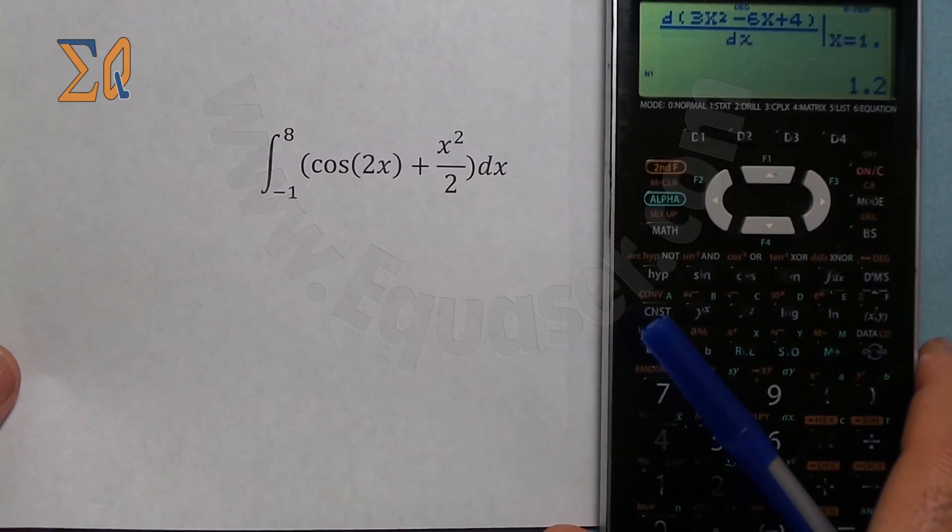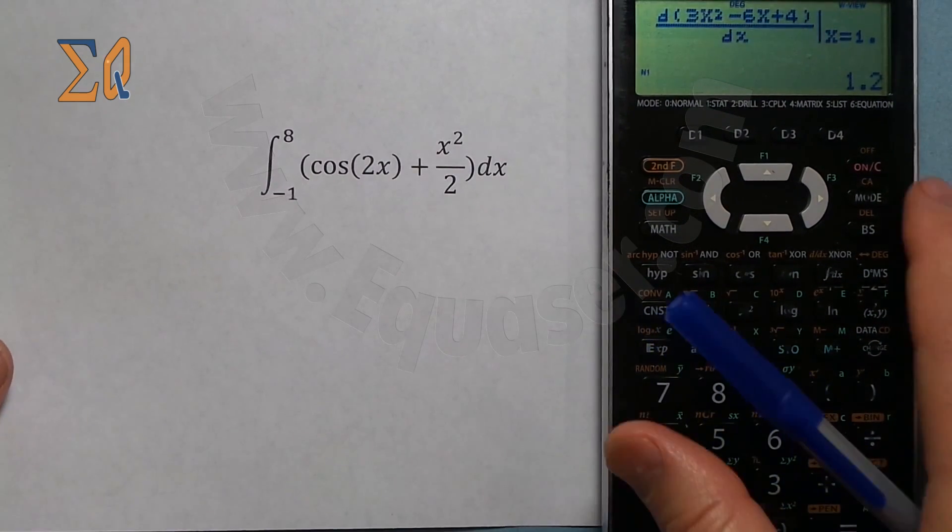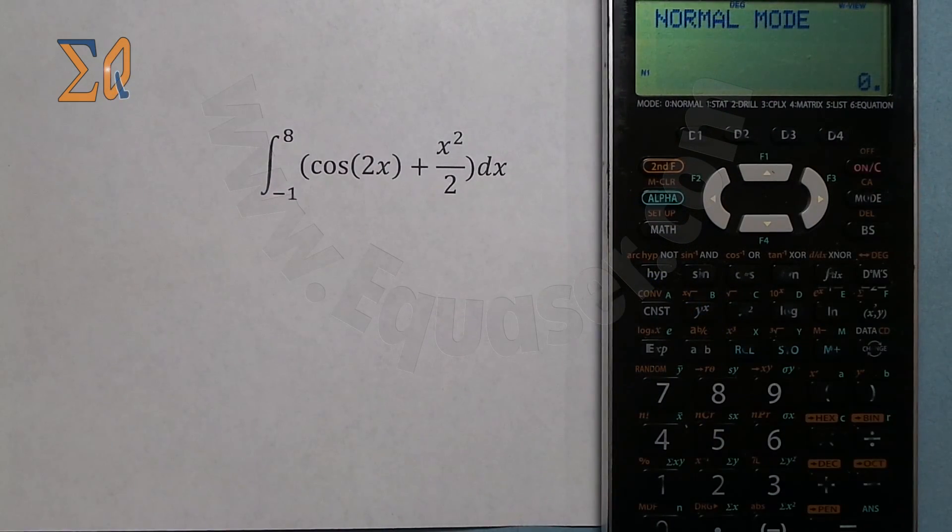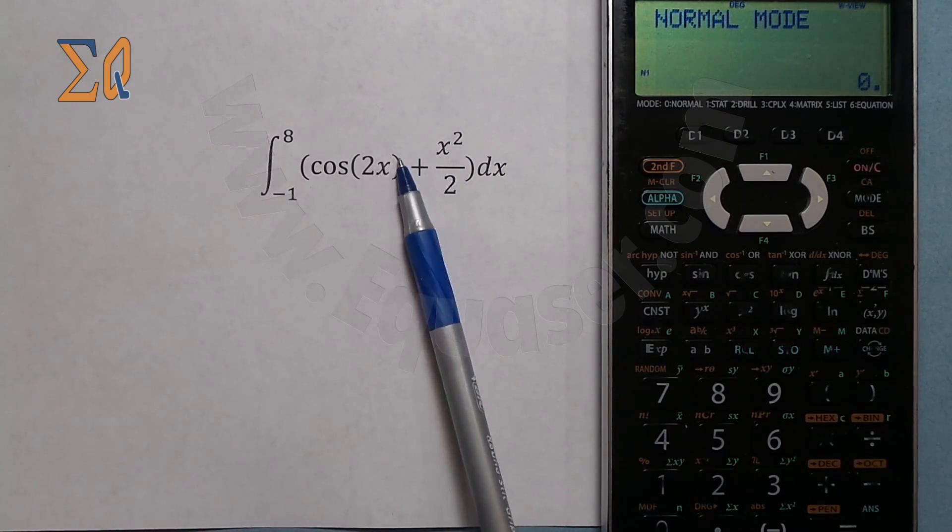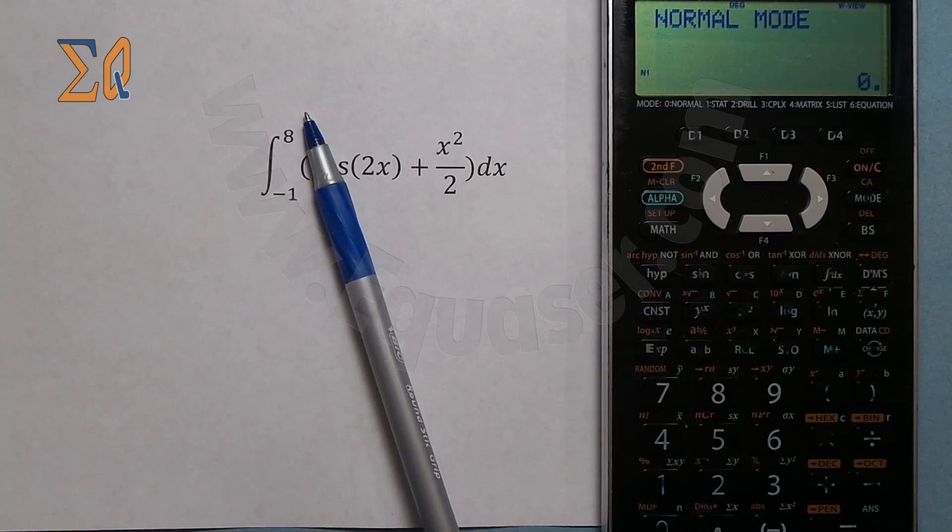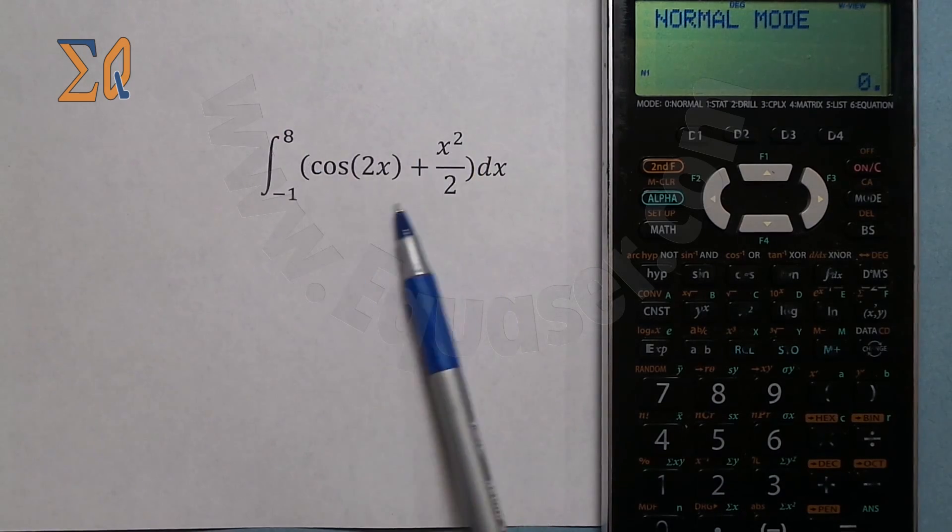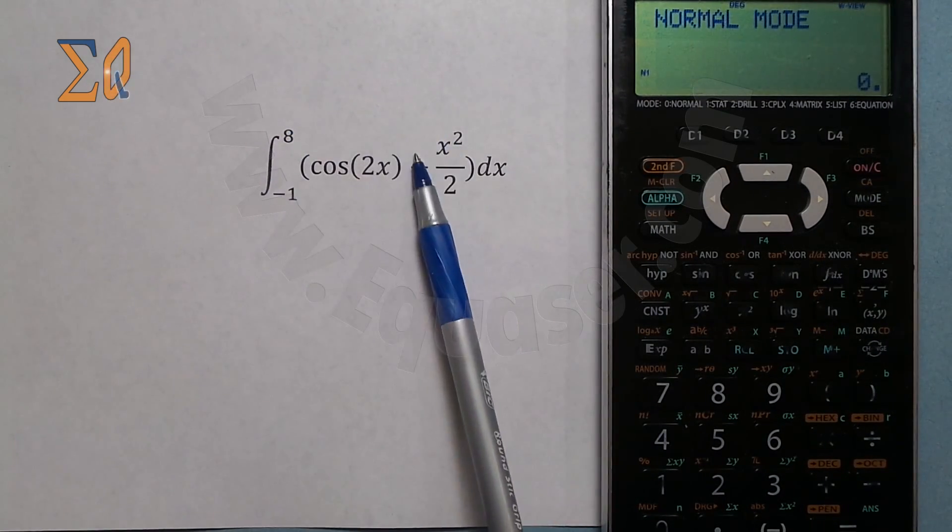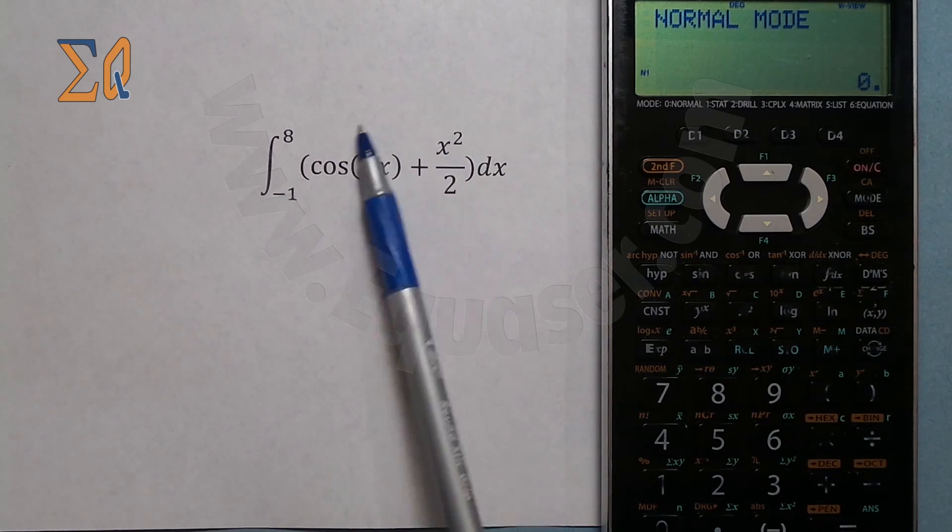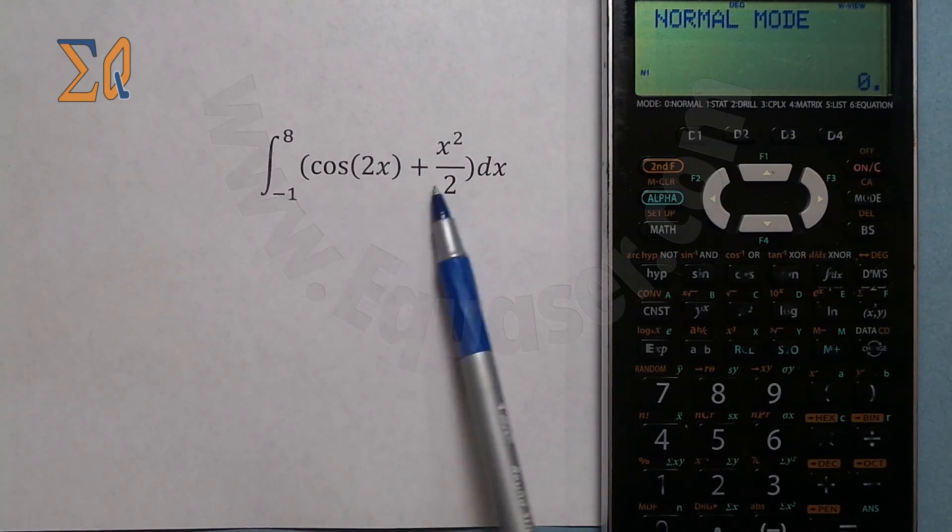The same way, you want to calculate a definite integral from -1 to 8, meaning I have to take the integral of this function, plug in this value into the taken integral, and subtract it.